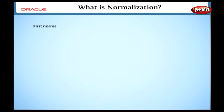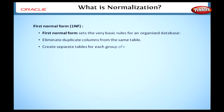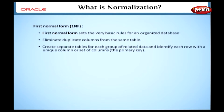Now we are going to discuss the first normal form in detail. The first normal form sets the very basic rules for an organized database: eliminate duplicate columns from the same table, create separate tables for each group of related data, and identify each row with a unique column or set of columns — the primary key.